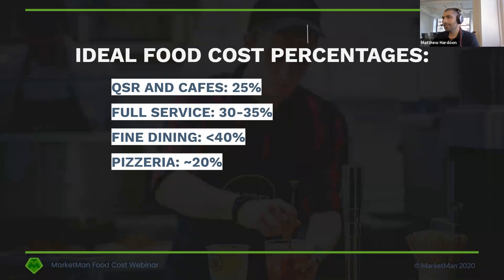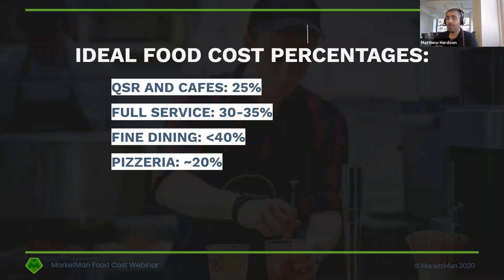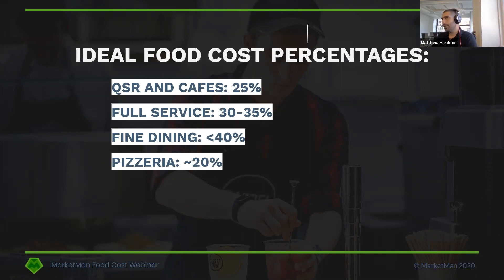In terms of ideal food cost percentages — take these with a grain of salt, we're talking about global averages. MarketMan services a network of 6,000 customers across 55 different countries, and the platform is translated in 10 different languages. In sum: QSRs and cafes are around 25% food costs; full service restaurants somewhere in the realm of 30 to 35%; fine dining establishments should target under 40%; and pizzerias somewhere in the 20% range. By leveraging a platform like MarketMan, we hope to save on average 2 to 5% of your overall food costs through careful management and automation.